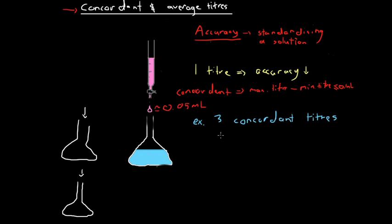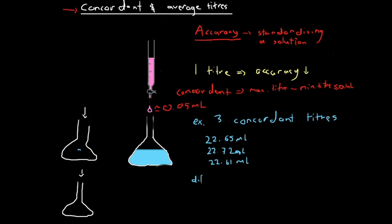So if we're looking for three concordant titers, let's say the first titration gives a titer volume of 22.65 mL. We write it down, get a fresh aliquot, do it again, and get 22.72 mL — they're within 0.1 mL of one another. Then we do it again and get 22.61 mL. We've got three titers; let's check if they're concordant. The maximum is 22.72 and the minimum is 22.61, so the difference is 0.11 mL — and that is no good.